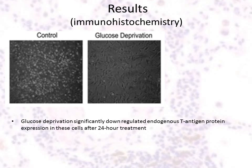For these studies, we used the mouse medulloblastoma cell line, which was isolated from medulloblastoma tumors induced in transgenic mice expressing the JC virus T antigen. Using immunohistochemistry for T antigen, we found that glucose deprivation significantly downregulated endogenous T antigen protein expression in the cells after 24-hour treatment.